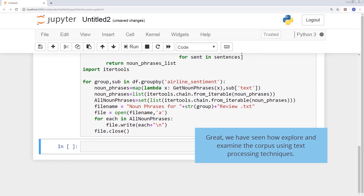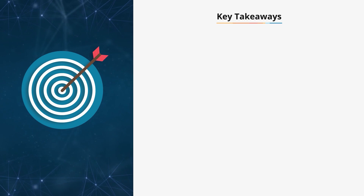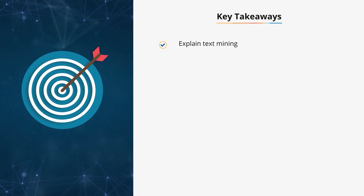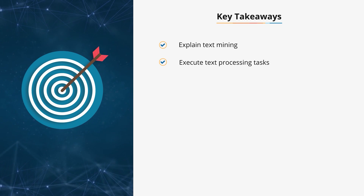We have now seen how to explore and examine the corpus using text processing techniques. Let's recap the steps covered: (1) Import the dataset. (2) Extract noun phrases. This brings us to the end of text mining. You are now able to explain text mining and execute text processing tasks.